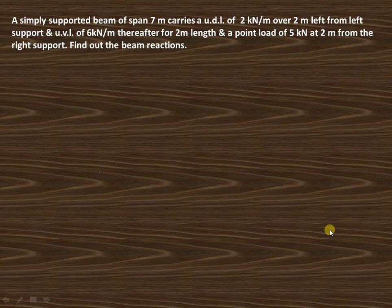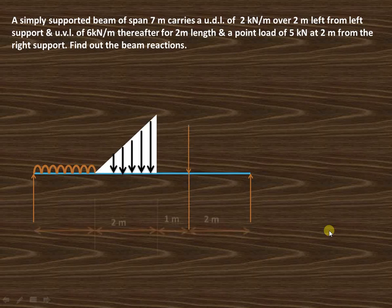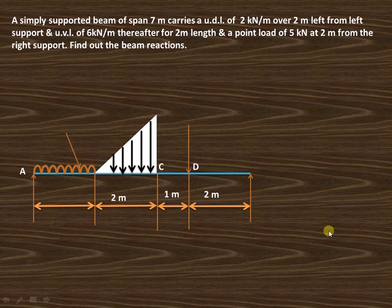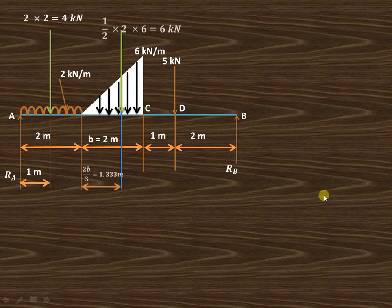In this video we'll try to understand how to find out the beam reactions in case of a simply supported beam carrying UDL as well as UVL — uniformly distributed load and uniformly varying load. We have shown an arrangement with a uniformly distributed load of 2 kilo newton per meter acting at a distance of 2 meter from the left hand support for the next 2 meters, then a uniformly varying load starting from 0 to 6 kilo newton per meter, and a 5 kilo newton point load acting at a distance of 2 meter from the right hand support.